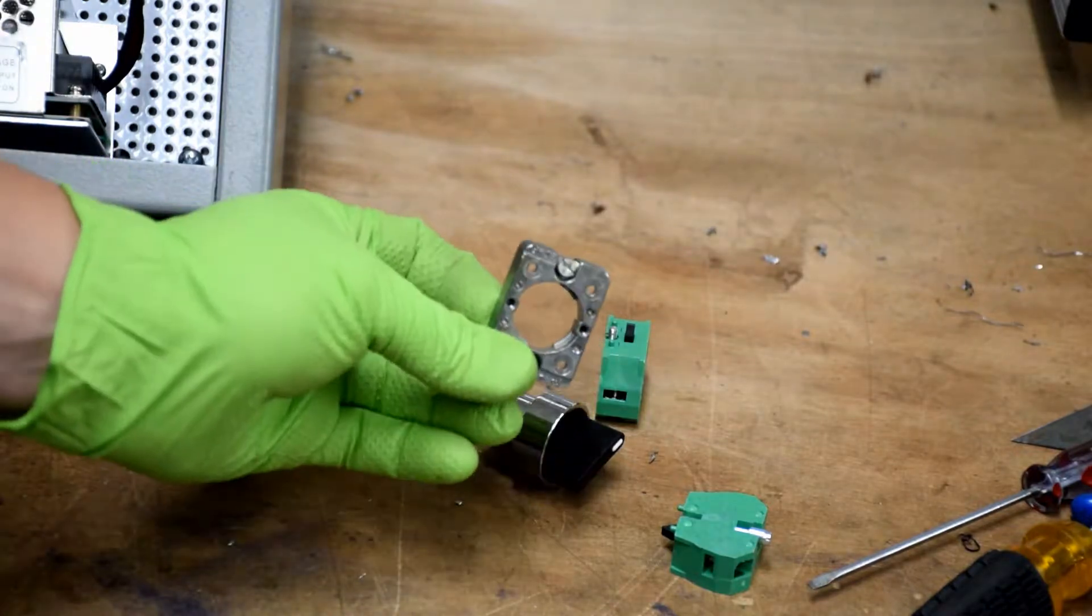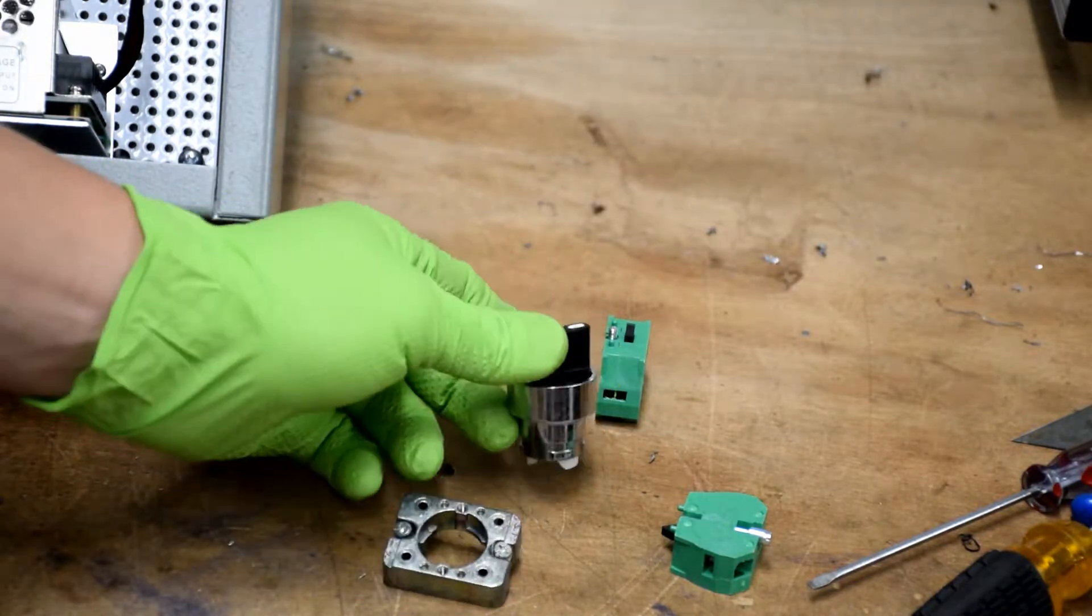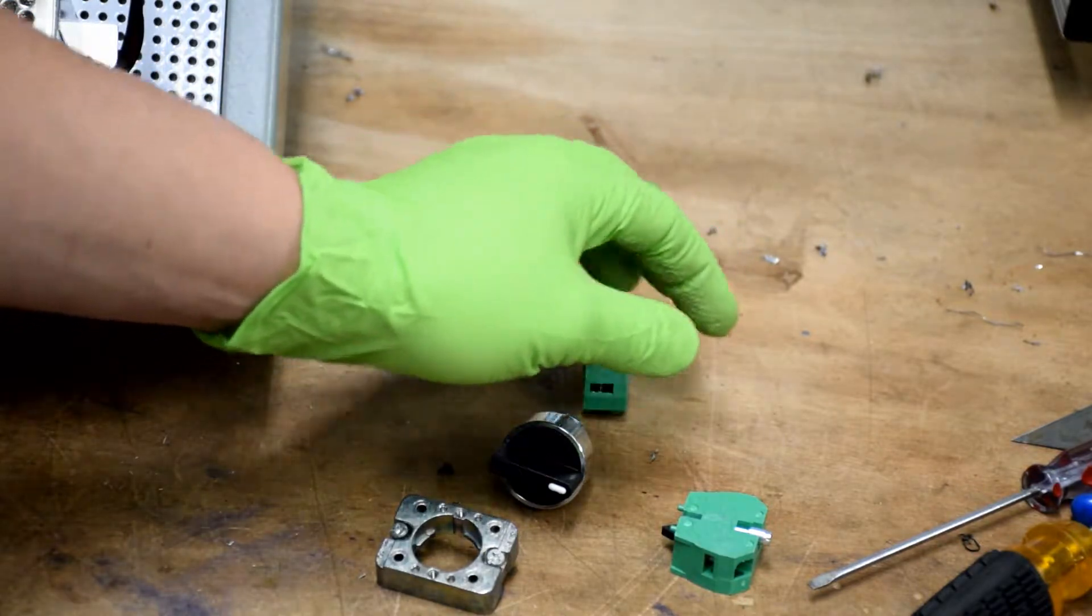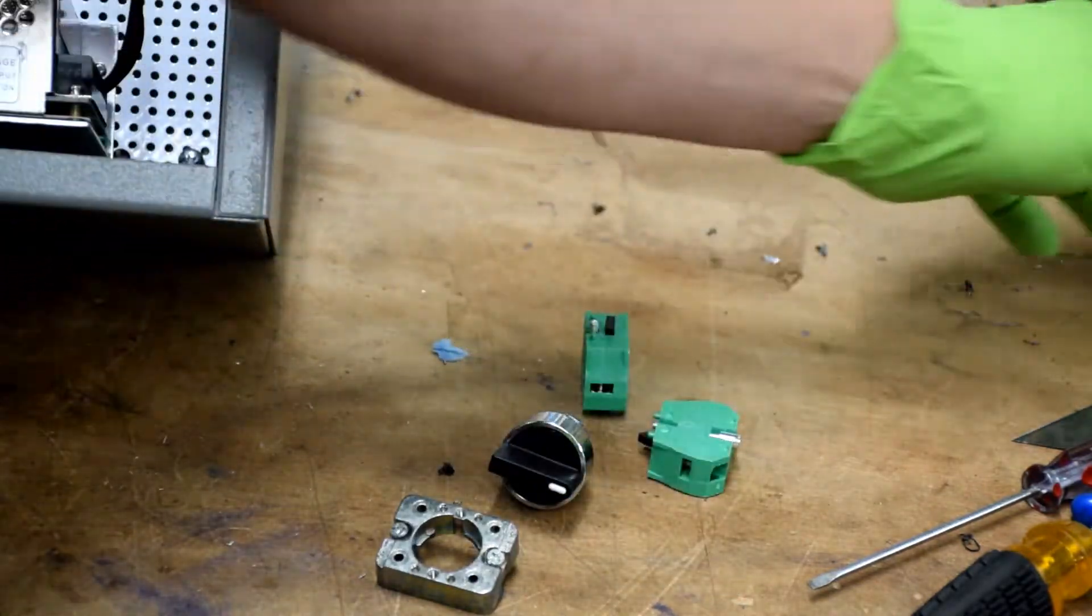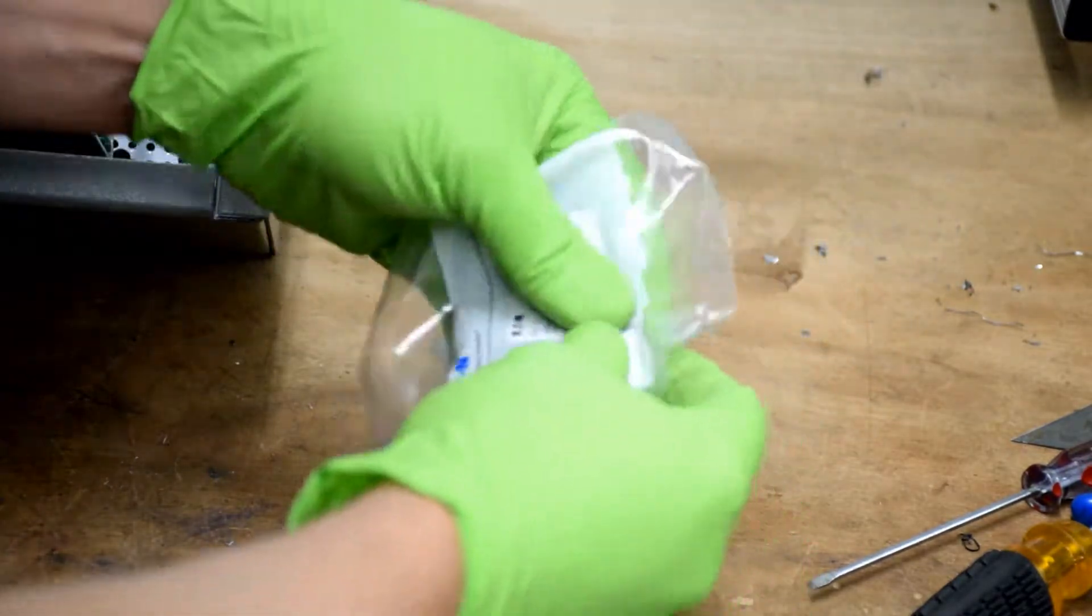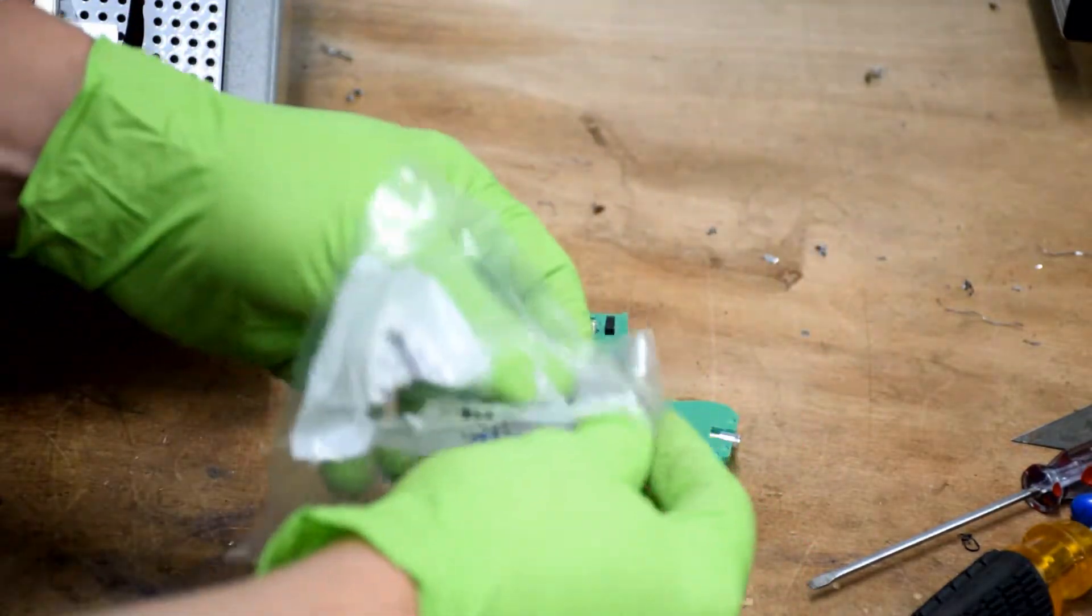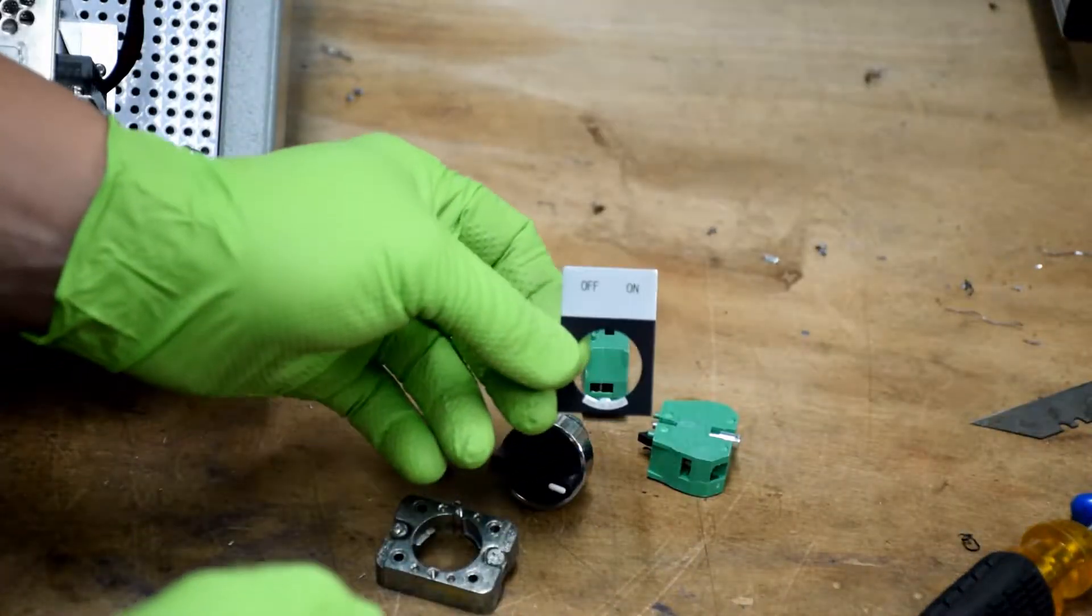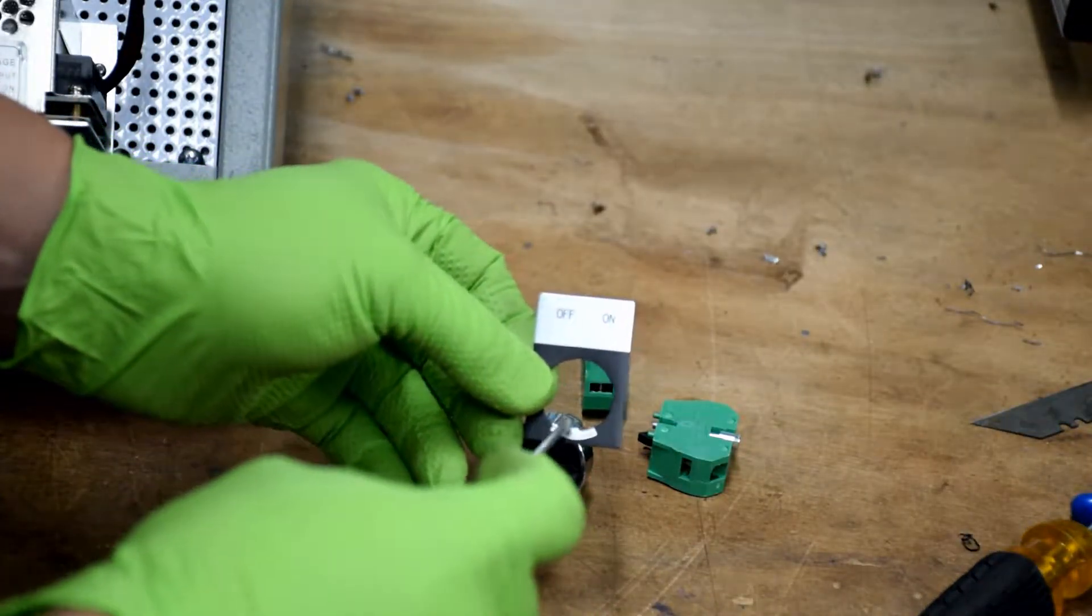So these are the on-off switch components. It only comes with one terminal block, so you'll need to order a couple extras. So I have two. I like to turn the line and the neutral off. Also you don't have to, but I like to order this little legend plate here, a little on-off switch. It looks really nice.